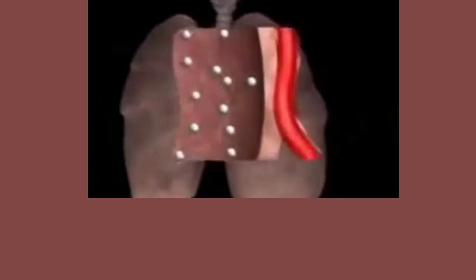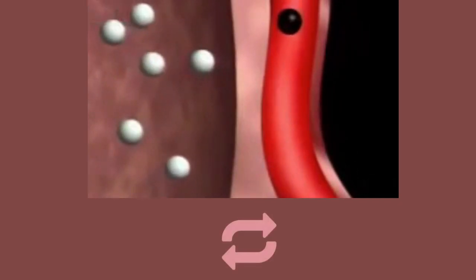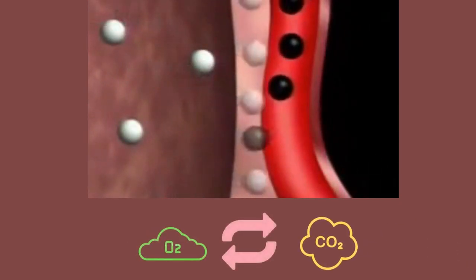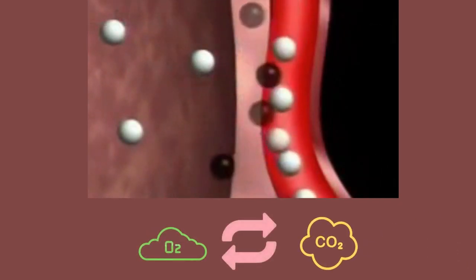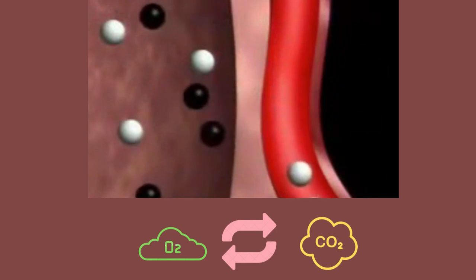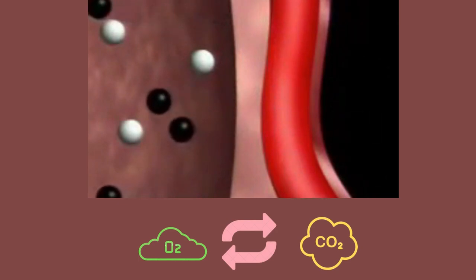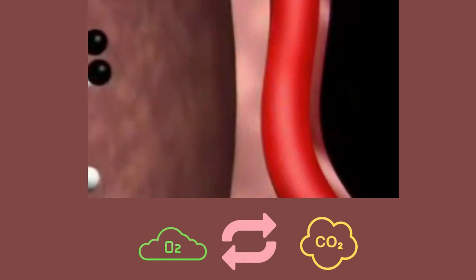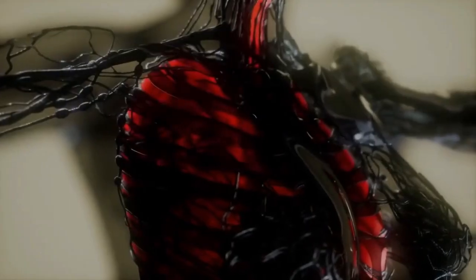When you inhale, oxygen enters your lungs and is transferred to the alveoli. The transport of oxygen into the blood and the elimination of carbon dioxide from the blood take place here. The molecules will travel from the alveoli into the blood and back as they should if the partial pressures of oxygen and carbon dioxide are normal.